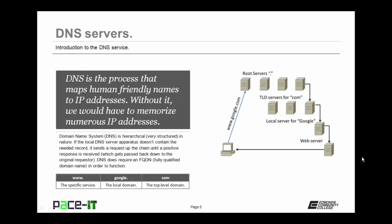DNS is the process that maps human-friendly names — such as www.google.com — to their appropriate IP addresses. Without DNS, we would have to memorize all of the IP addresses that we wished to visit. DNS stands for domain name system, and it's very structured in nature. If the local DNS server apparatus doesn't contain the needed record, it sends the request up the DNS chain until a positive response is received, which then gets passed back down to the original requester. DNS does require that a fully qualified domain name — FQDN — is used in order for it to function properly.